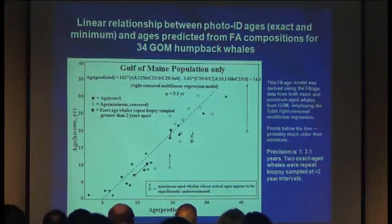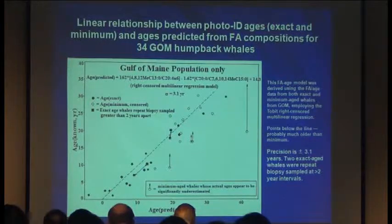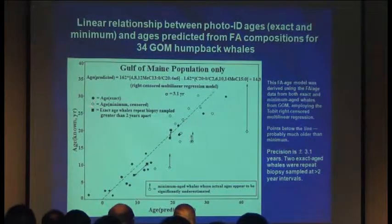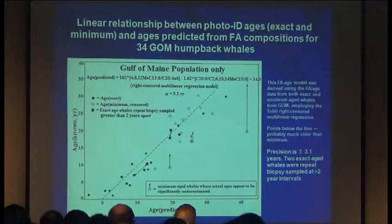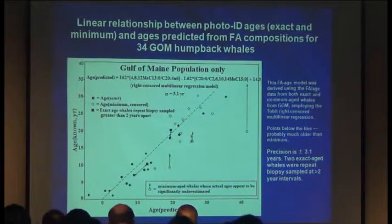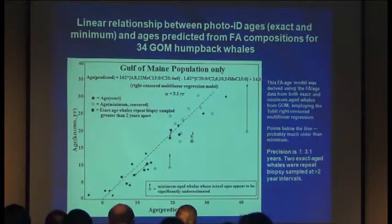Here is the model developed for 34 Gulf of Maine humpback whales — different fatty acid ratio terms than for southeast Alaska. Exact age animals are in solid circles; minimum censored are in non-solid circles. Those minimum aged animals were probably older than estimated. For this model, the precision is 3.1 years. Notably, Jooke Robbins provided samples of the same whale sampled at least two years apart, and the model still held — the ratios are increasing as they are sampled later.